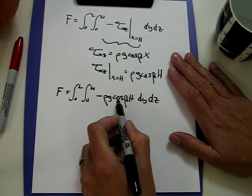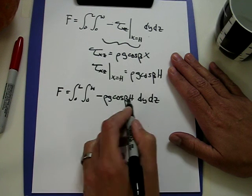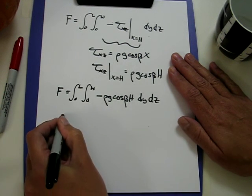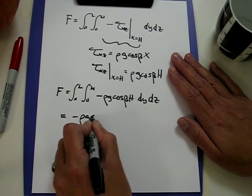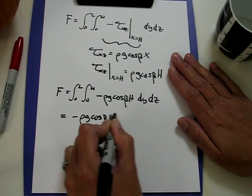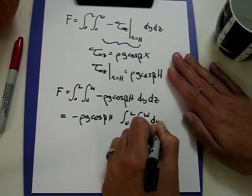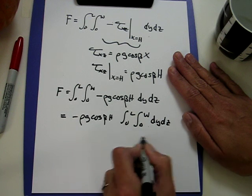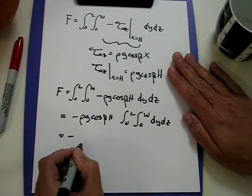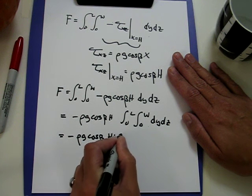Now rho g cos beta h, nothing in here is a variable, so they can all come right out the integral. And we have two simple integrals: minus rho g cos beta h, the integral from 0 to L, the integral from 0 to w of dy dz. This one gives me w, this one gives me L. And I get minus rho g cos beta h w L.